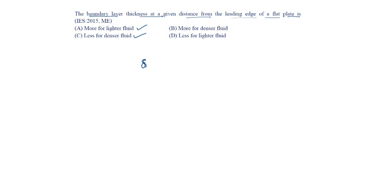We know delta by x is equal to 5 by root Re_x in laminar and in any boundary layer condition, it is inversely proportional to Reynolds number to the power 1 by n. n is 2 for laminar.